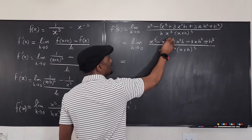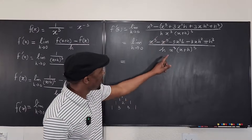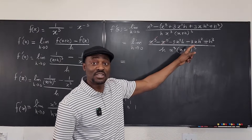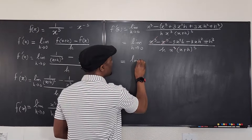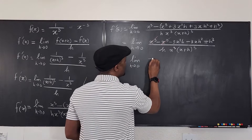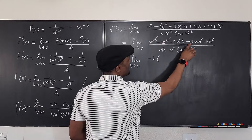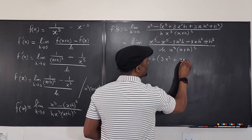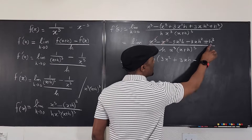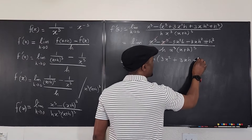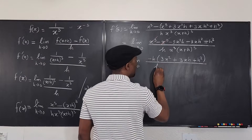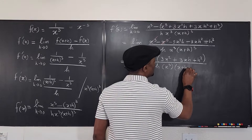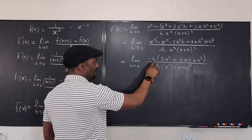At this point, we simplify. The x³ and −x³ cancel each other out. Everything remaining in the numerator contains an h, so we can factor out negative h. Taking out −h gives us −h(3x² + 3xh + h²), all divided by h·x³·(x+h)³.